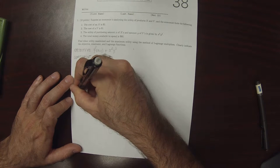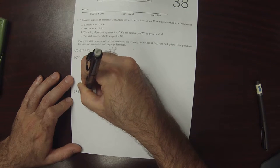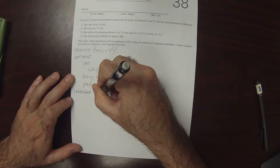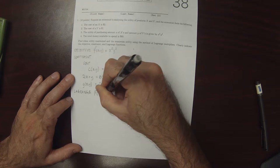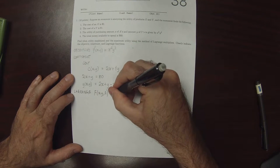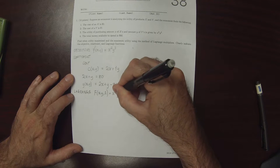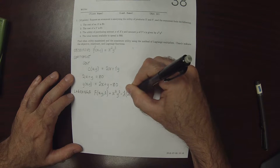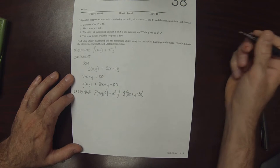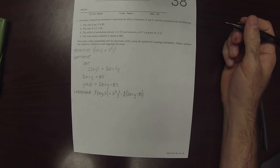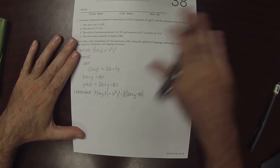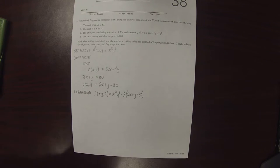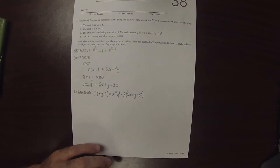Therefore, the Lagrange function is big F of x, y, and lambda is the objective x squared y cubed minus lambda times the constraint, 2x plus y minus 80. The method of Lagrange multipliers tells us that the maximizer needs to be a stationary point of the Lagrange function.